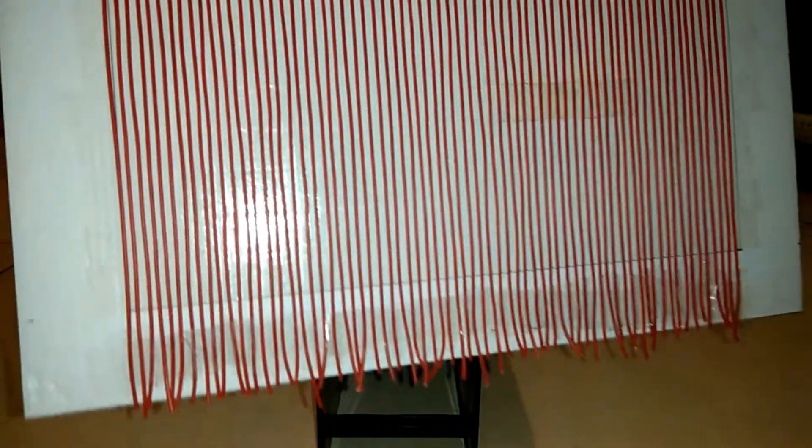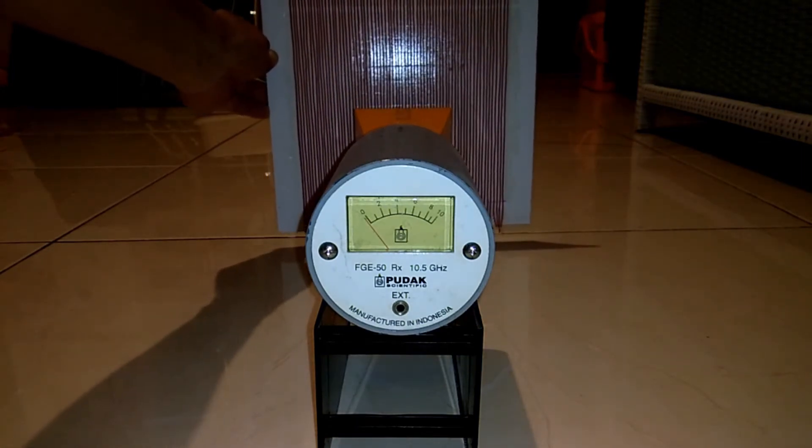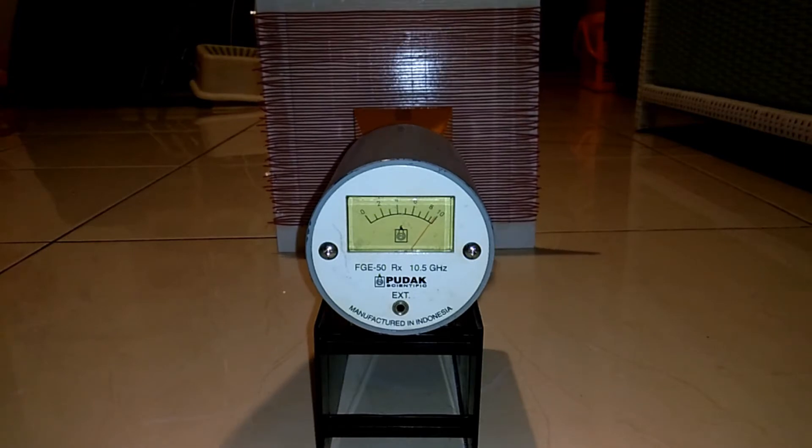In the second arrangement, the number of conducting cable is doubled. Now every groove is covered and the distance between adjacent cable is 3mm. Now the microwave can be completely blocked when oriented parallel to the cable on the sheet.